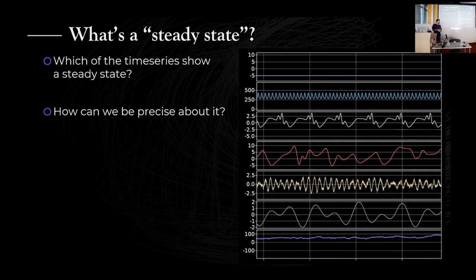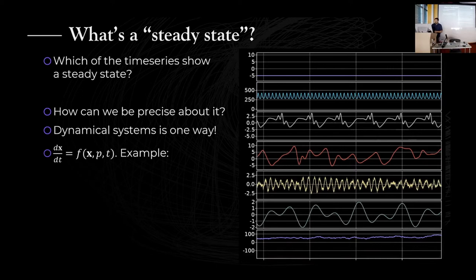One way would be to go down the statistics route and stationarity. The other way, which is what I will present, is the dynamical systems way, where you say my physical system can be approximated using dynamical systems theory. I have a nice state called X — these states are just the quantities or variables that describe the system, like temperature or humidity — and they evolve in time given some arbitrary rules.